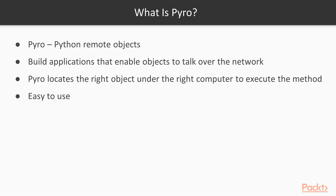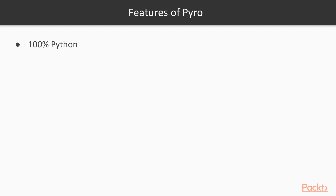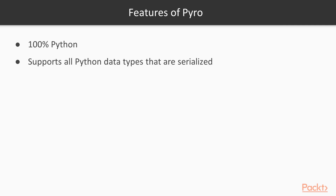Pyro is designed to be very easy to use and to generally stay out of your way. It also provides a set of powerful features that enables you to build distributed applications rapidly and effortlessly. Pyro is written in 100% Python, so it's extremely portable. Pyro supports all Python data types that are serializable, like Serpent, JSON, Marshal, Pickle, etc.